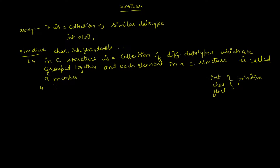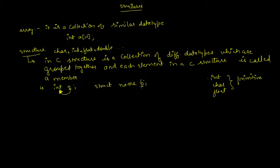In the same way that you declare an integer variable as int a, when you declare a structure — for example, struct name — then a variable b will be of type name. We will see how to define a structure and declare a variable with a structure shortly.